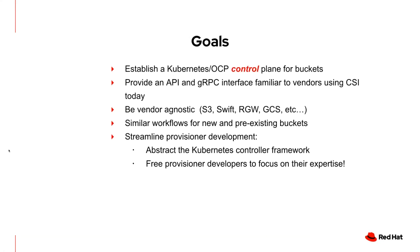To touch on some of the goals of the project: we want to create a control plane within Kubernetes and OpenShift for buckets. We're not replacing or abstracting the actual object store vendor protocols — that is S3, GCS, Azure Blob — so users will still use those SDKs. We want to normalize the experience of provisioning buckets. We want to provide vendors an easy onboarding experience when writing their provisioners, much like a CSI written against a gRPC interface with a handful of methods. This abstracts away all of the Kubernetes controller framework so that provisioner authors don't have to be Kubernetes experts.